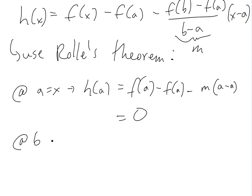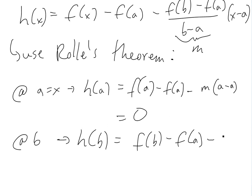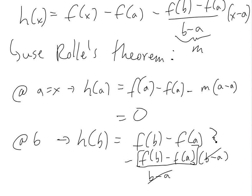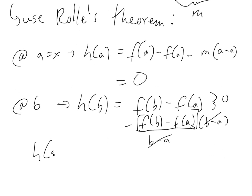And at b, we have h of b equals f of b minus f of a minus, and then the slope is f of b minus f of a over b minus a, times b minus a. So these cancel right here, and we're going to have f of b minus f of a minus f of b minus f of a, which is just 0. So we have h of a equals h of b equals 0.